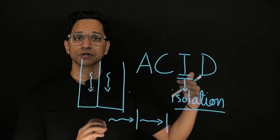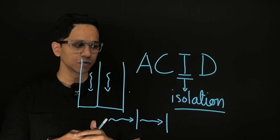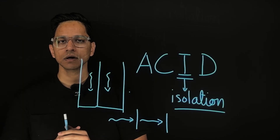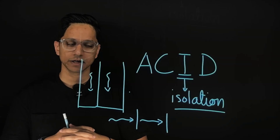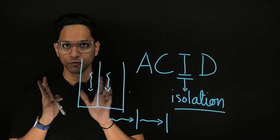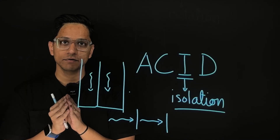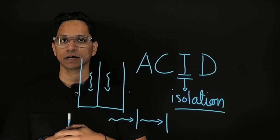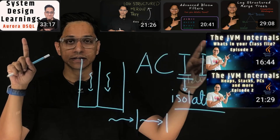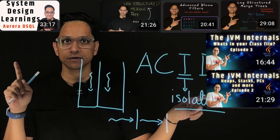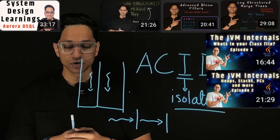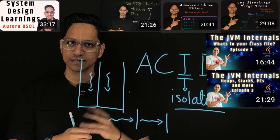We are going to talk about isolation levels in the next video. But for today, let's talk about the problems that may happen if concurrency is not dealt with in the right manner, also from the application's perspective. If you haven't joined the membership of the channel yet, please consider joining to get access to all these videos — database internals, JVM internals, and other topics that are coming up.